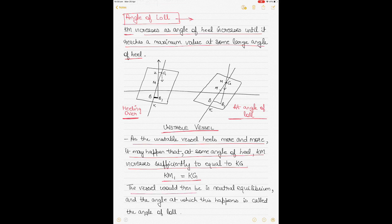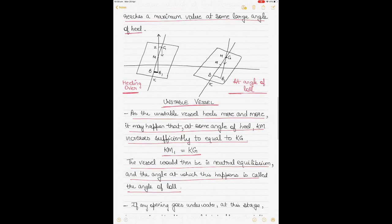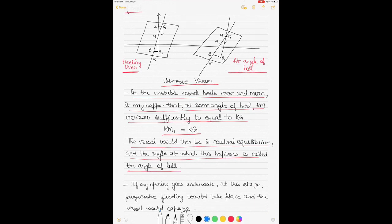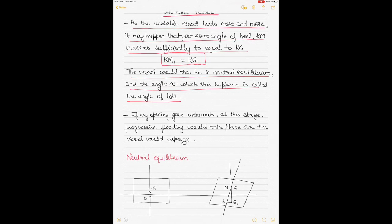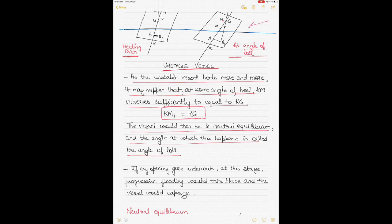When KM increases sufficiently to equal KG, the vessel is then in a condition of neutral equilibrium, and the angle at which this happens is called the angle of loll. As shown in the diagrams, as the vessel heels further, KM increases until KM equals KG. At this point — called KM1 — neutral equilibrium is achieved. The angle of loll is that specific heel angle where KM equals KG.